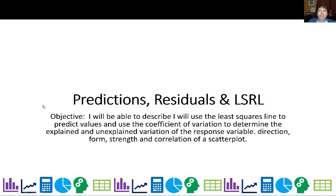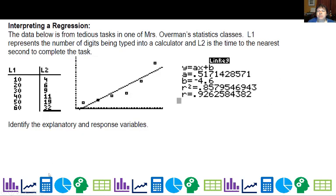So now we're looking at predictions, residuals, and the least squares regression line, also called LSRL. The data below is from a tedious task in one of my stats classes. L1 represents a number of digits being typed into a calculator and L2 is the time to the nearest second to complete the task. We need to determine the explanatory and the response variables.